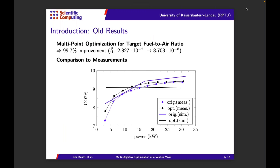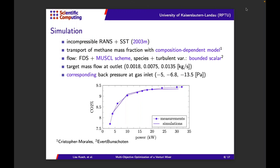Last year some results on the multipoint approach were shown, focusing just on meeting the target values, and we got some nice results. In blue is the original design's CO2 percentage curve over power levels, and the black one is the optimized design. However, the design in experiment was still not agreeing completely with our simulations, so we revisited our simulations with many changes. Especially important were new functionalities — the composition-dependent model and the Bounder Scalar model — introduced by Christopher and Ewart. With those, we could get much better agreement with measurements. The dots are the measurements and the bold curve is the simulation.